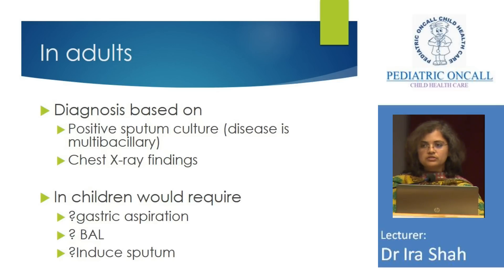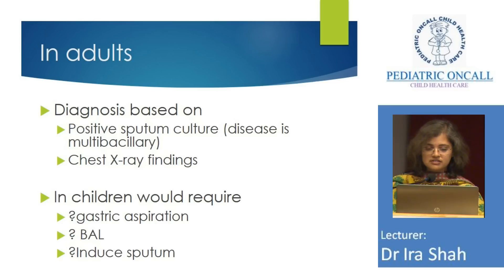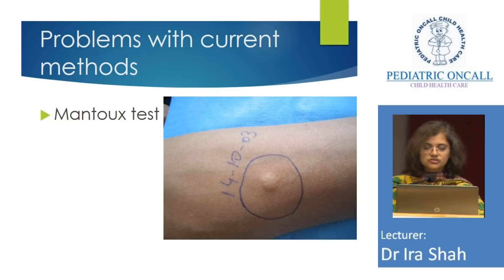In adults, we don't do a MANTU test to make a diagnosis of TB — we base it on a positive sputum culture and X-ray. In children, to get sputum, either we need a gastric lavage, which means admission, putting in a Ryles tube — not very pleasant — or a BAL or an induced sputum. Nothing is very convenient to do in children. So we said we'll do a MANTU test and we keep on doing it.